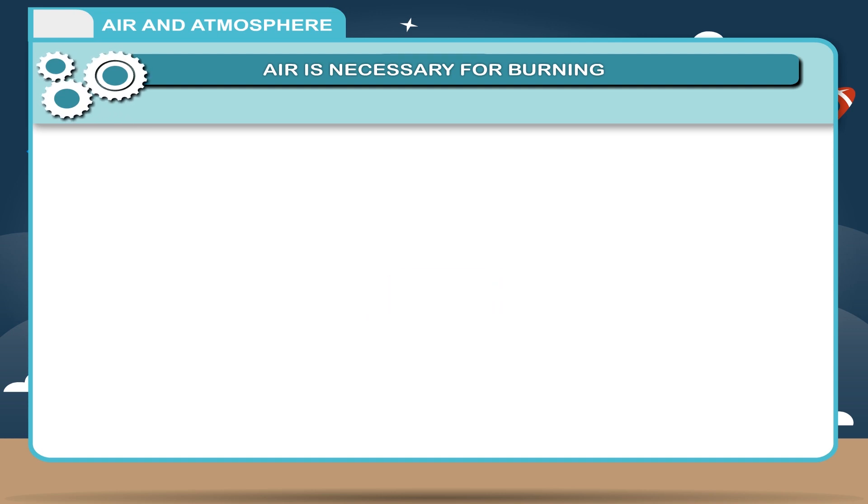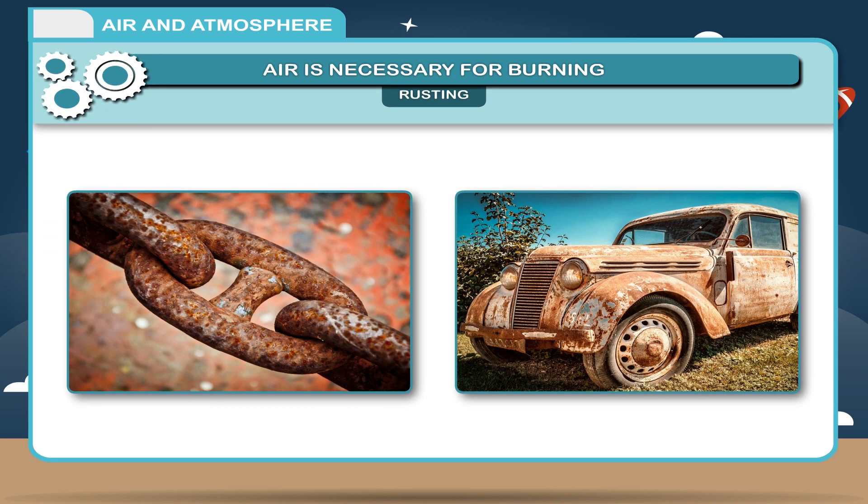Rusting. Another slow oxidation process is rusting. When iron is exposed to air, in the presence of moisture, a reddish-brown coating is formed on it. This is called rusting and the reddish-brown hydrated oxide of iron is called rust.